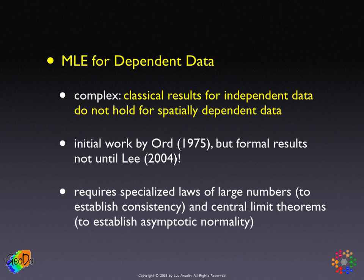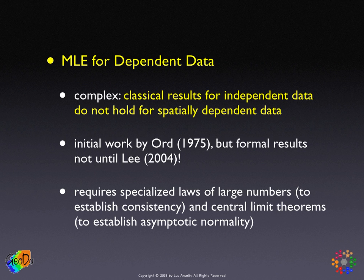The downside for spatial data and dependent data in general is that all classical results for independent data — the nice products of probabilities for joint probability, and the addition of individual log likelihoods for total log likelihood — none of that holds for dependent data. Whereas initial results on maximum likelihood estimation in spatial regression models were derived in the mid-1970s, formal proofs of consistency and asymptotic normality were not established until the mid-2000s, 30 years later.